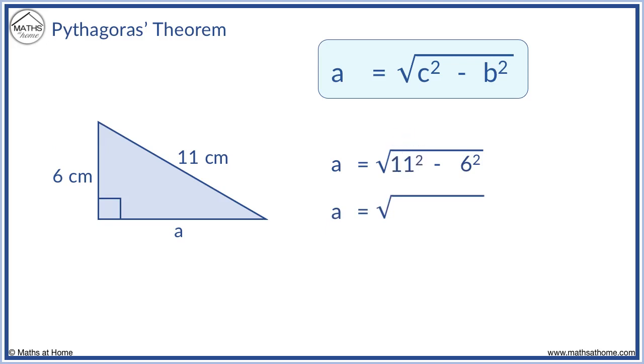11 squared is 121. And 6 squared is 36. 121 take away 36 is 85. Using a calculator, the square root of 85 is 9.2, rounded to one decimal place. So the missing side is 9.2 centimetres.